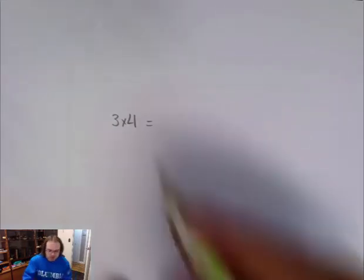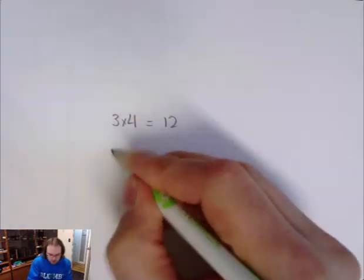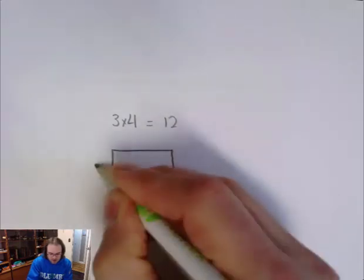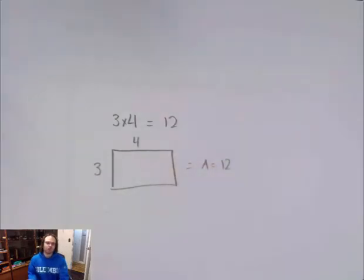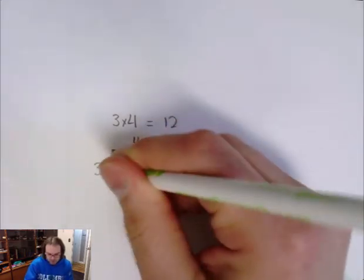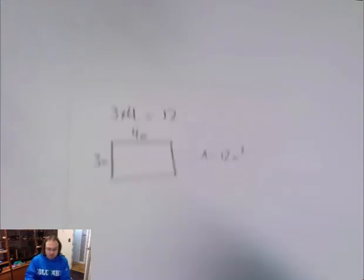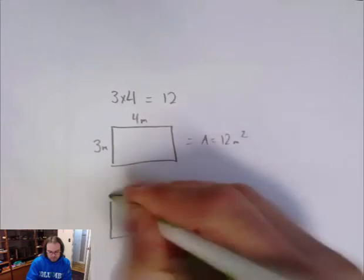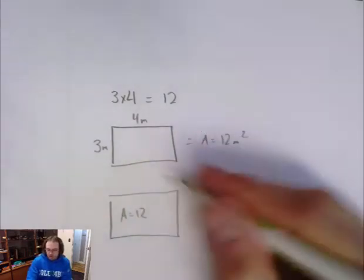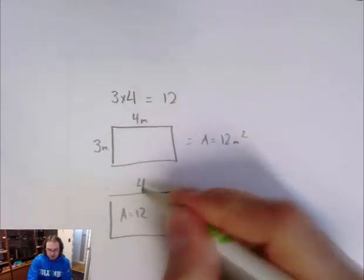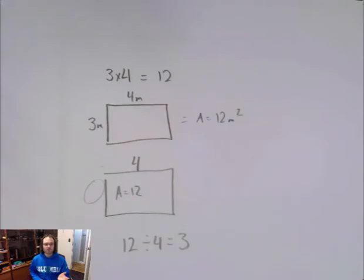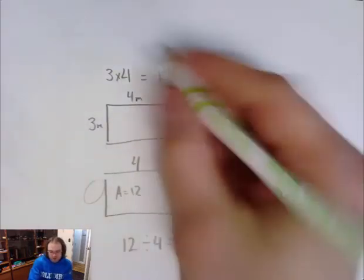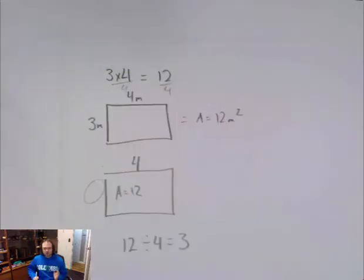So this is why we're going to review multiplication. So 3 times 4, we know that is equal to 12. If I was to draw this out, that means I have 3 by 4, which gives me an area of 12 units squared. So if this was meters, this is 12 meters squared. Now, let's say we knew my area is equal to 12. How do I find what my side lengths are? Well, if I know one side length is 4, I could find the other side length by going 12 divided by 4 is equal to 3.